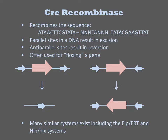Parallel site recombination, topologically speaking, results in excision of any intermediary sequence, while antiparallel sites undergo inversion. Such flipping systems are popular targets for controlling gene expression. Floxing a gene means encoding a gene flanked by loxP sites into the genome of the cell. Through later expression of Cre in the cell, that gene is excised and thereby deleted.